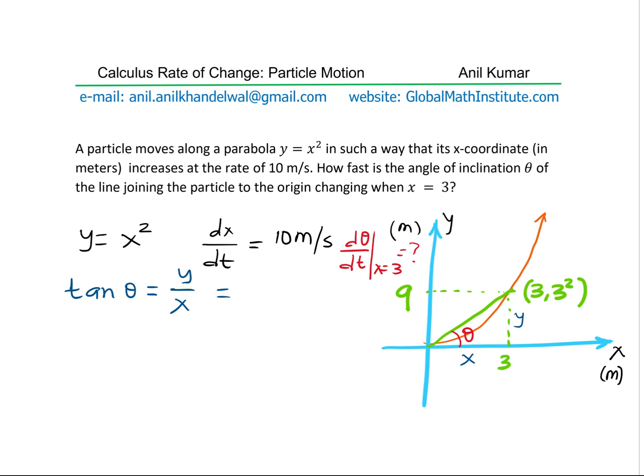However, y is x square. So I can write this as x square over x, which means tan theta is equal to x.